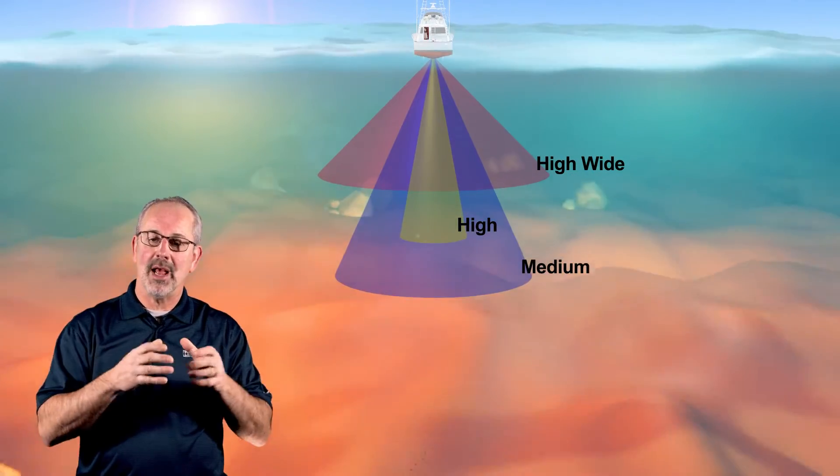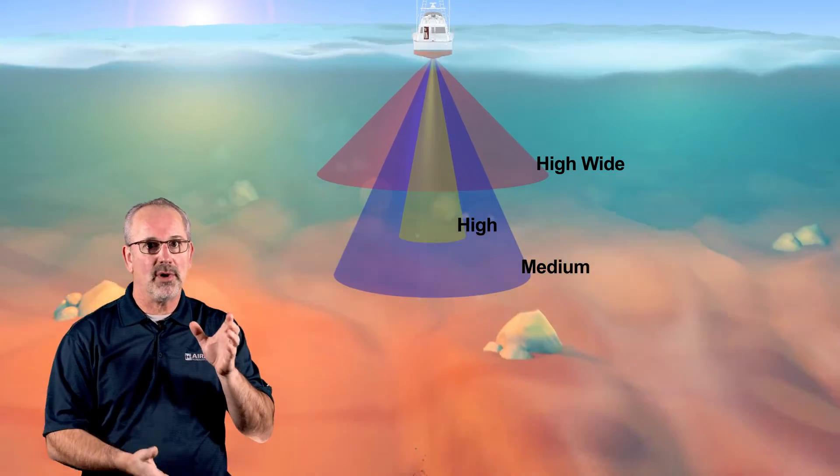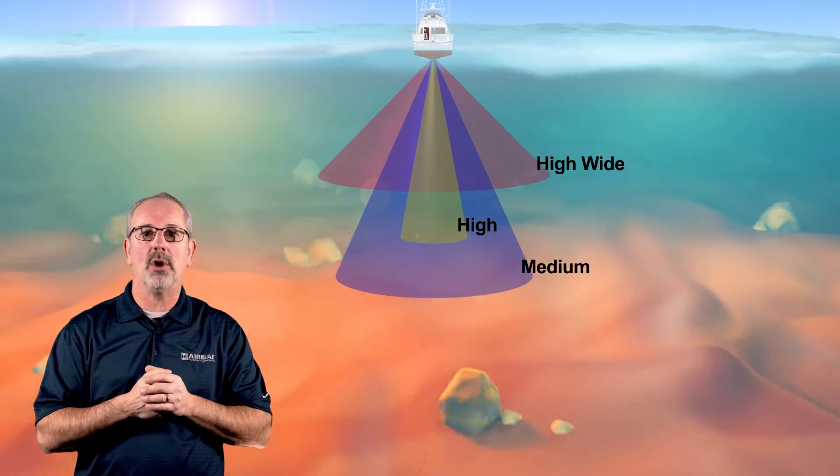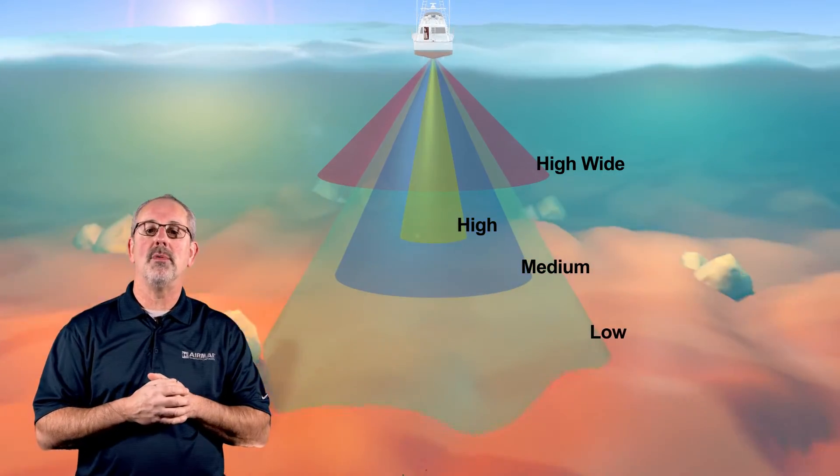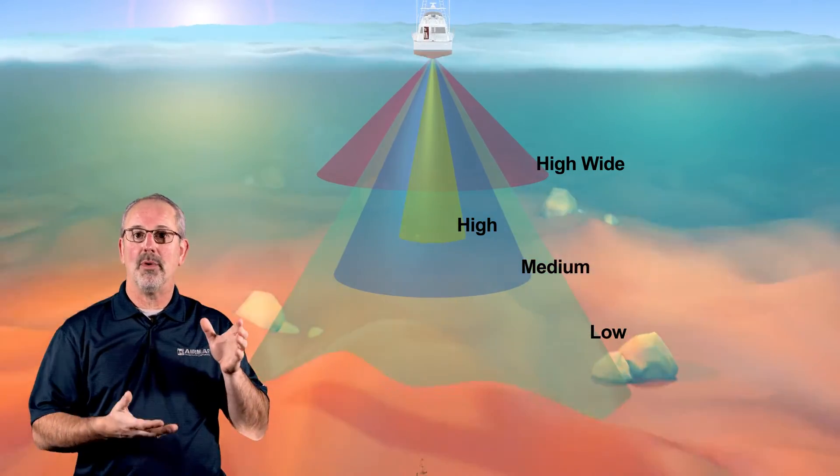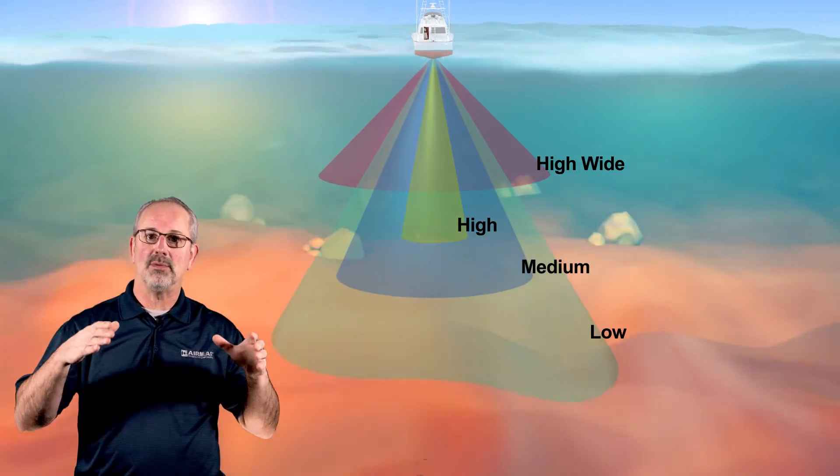Medium, as you might imagine, is a little bit wider. It'll give you a little bit more depth because those frequencies will penetrate that water column just a bit further. And then low is going to give you the most amount of depth performance that you can get. It also has a nice wide beam.